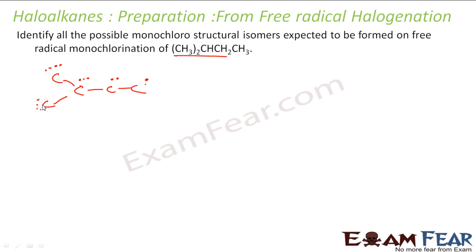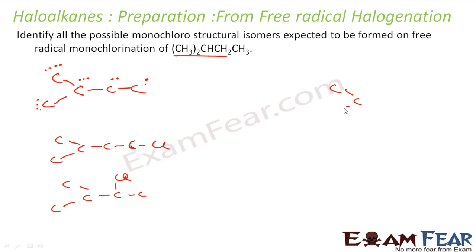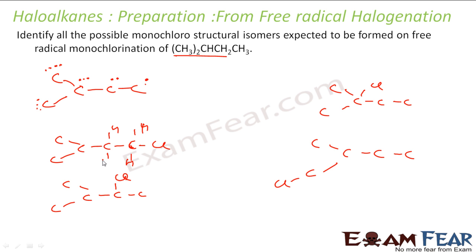If you replace a hydrogen on the carbon marked with one dot, you get one product. Replacing on the carbon with two dots gives a second compound. Replacing on the carbon with three dots gives a third compound. And replacing on any of the carbons with four dots — since they all give the same product — gives the fourth compound. So these are the four distinct monochloro structural isomers you will get.